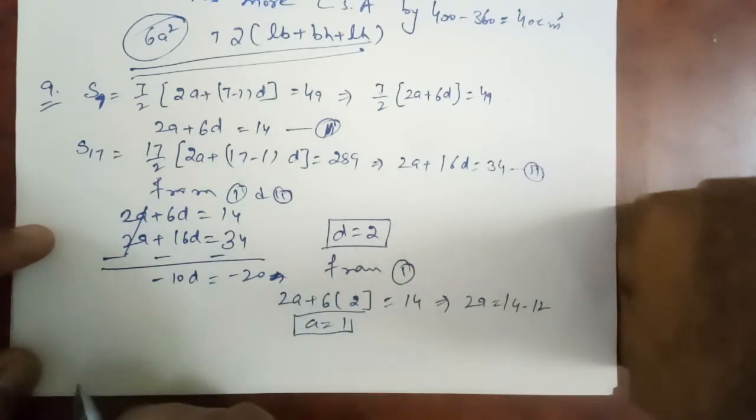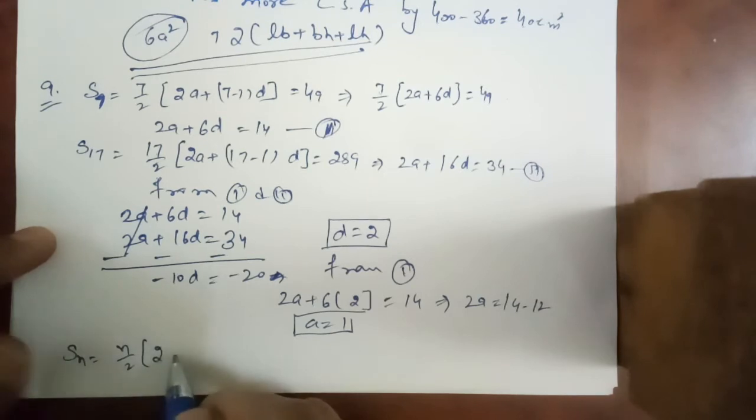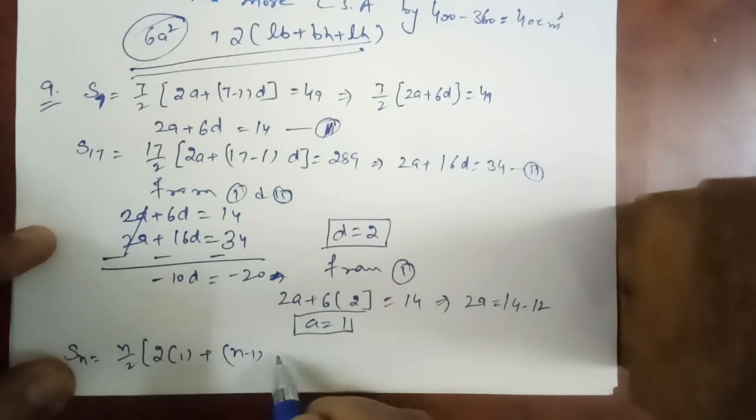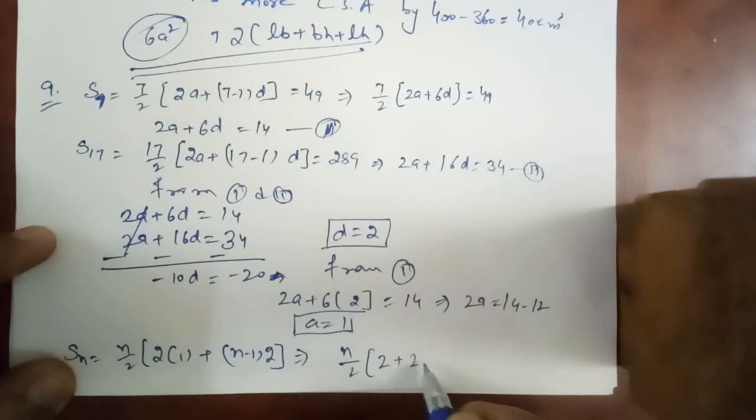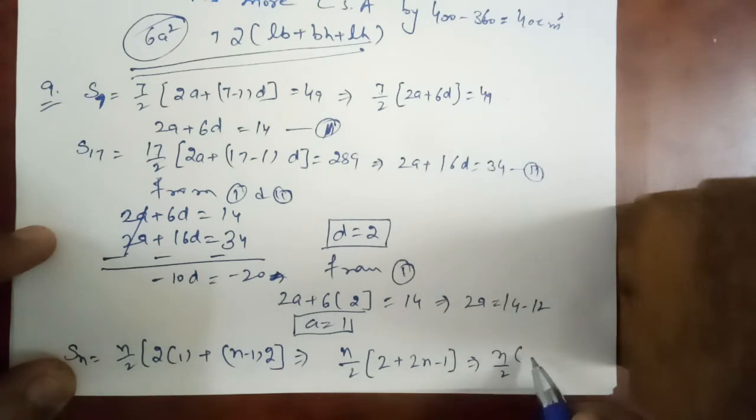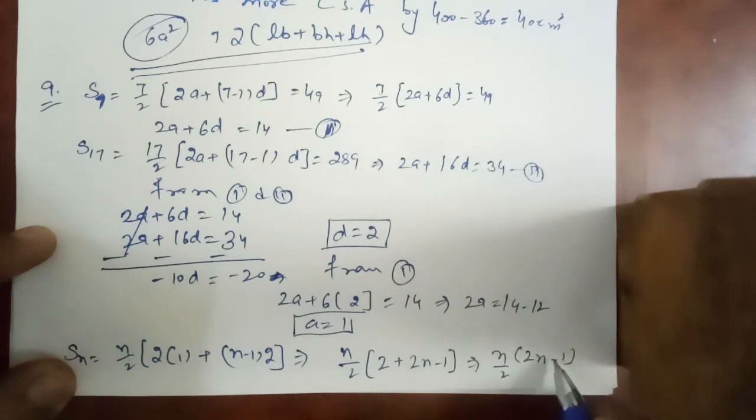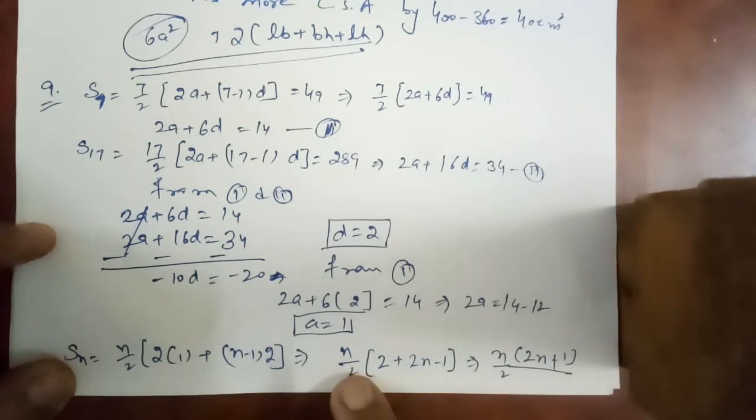With this value of A and D we can find sum of n terms. Formula of sum of n terms is n by 2, 2 into 1 plus n minus 1 into D. D is here 2. That is n by 2, 2 plus 2n minus 2. That is n by 2 into 2n.